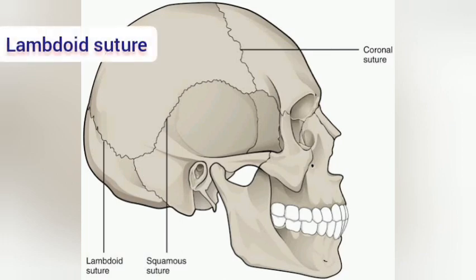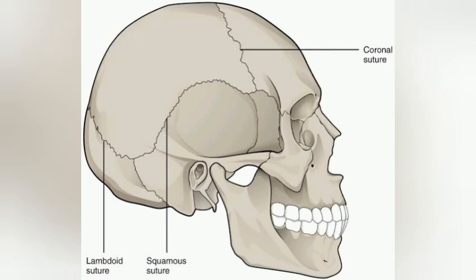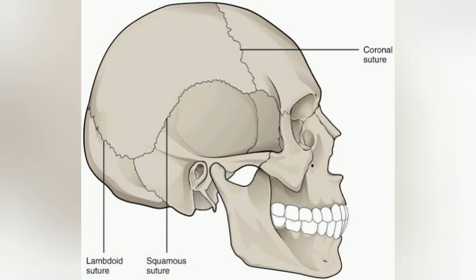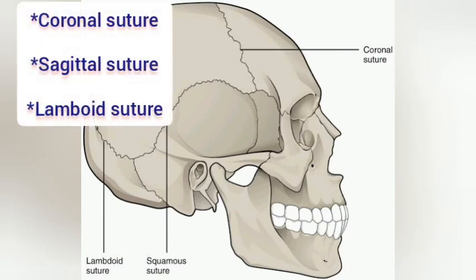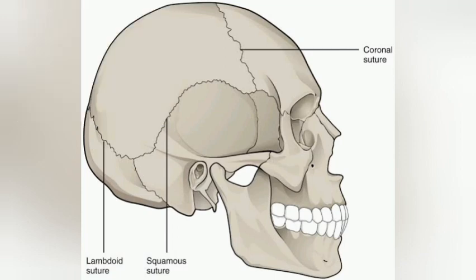We also have the lambdoid suture. The lambdoid suture — spelled L-A-M-B-D-O-I-D — is located between the two parietal bones and the occipital bone. So to summarize the sutures: we have the coronal suture, the sagittal suture, and the lambdoid suture. The coronal suture is formed between the frontal bone and the two parietal bones.